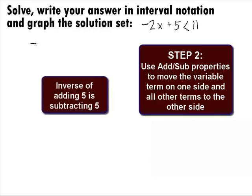The inverse of adding 5 is to subtract 5 from both sides, which will give us -2x + 5 - 5 < 11 - 5, which simplifies to be -2x < 6.